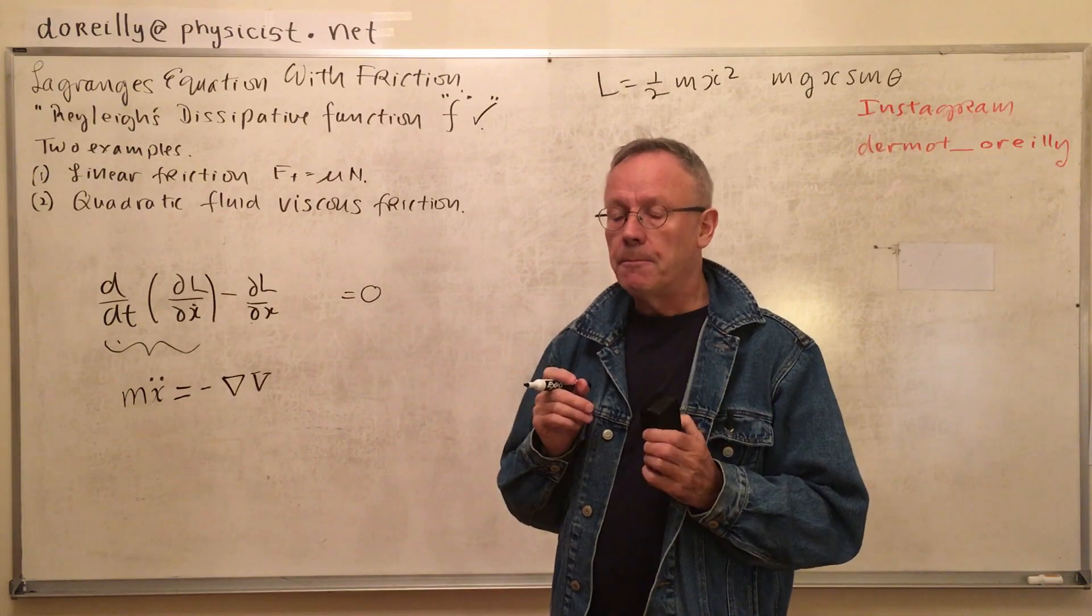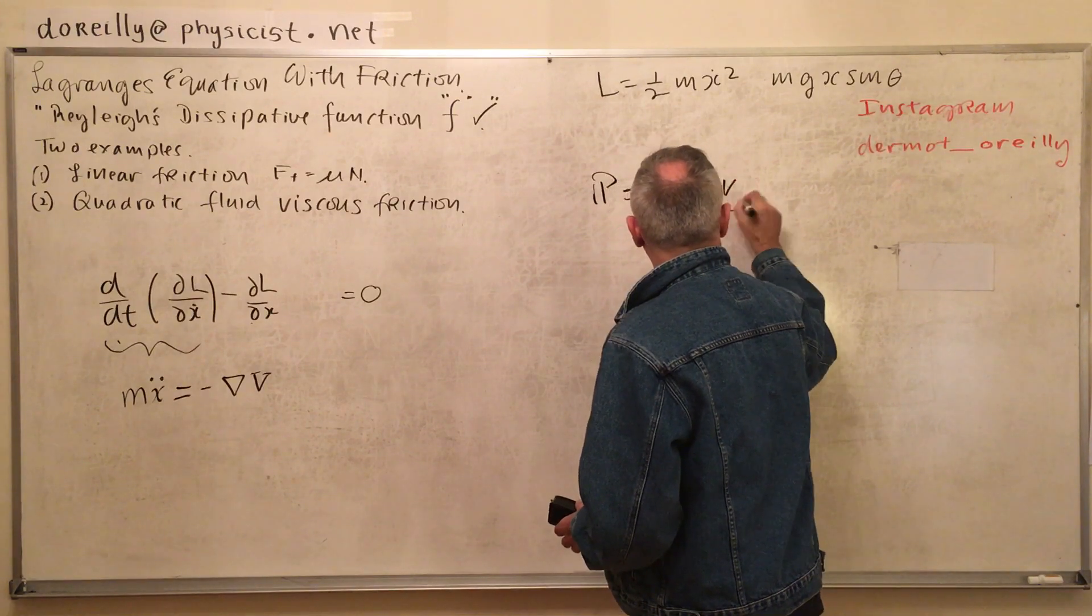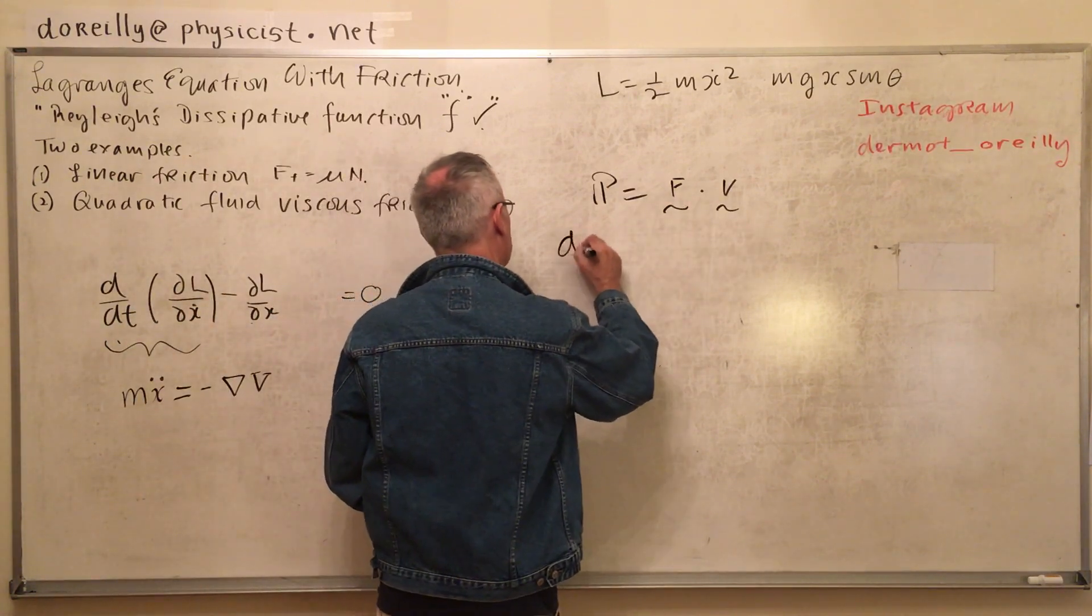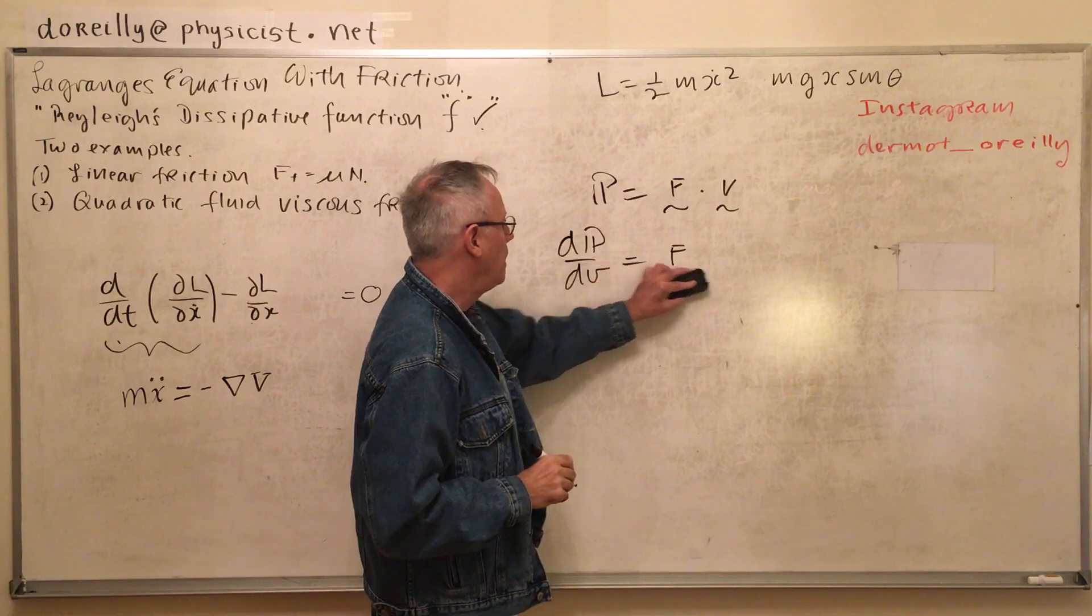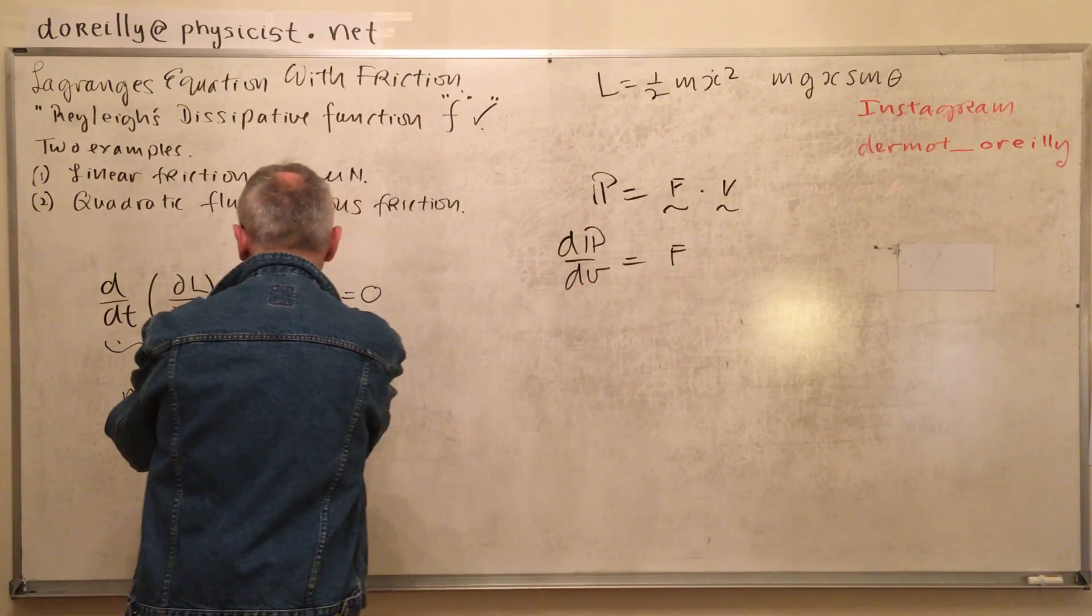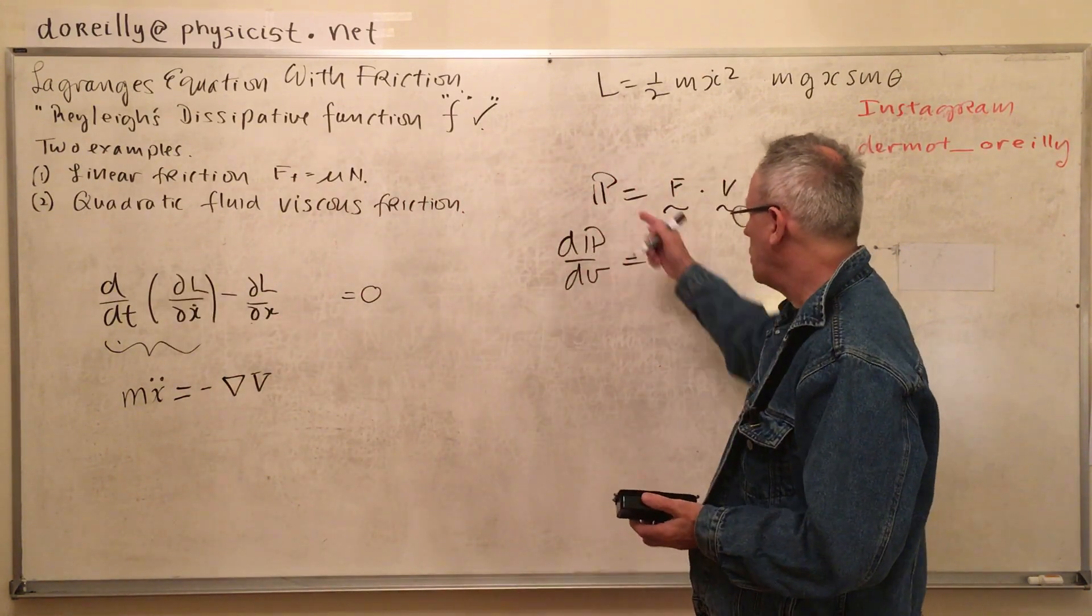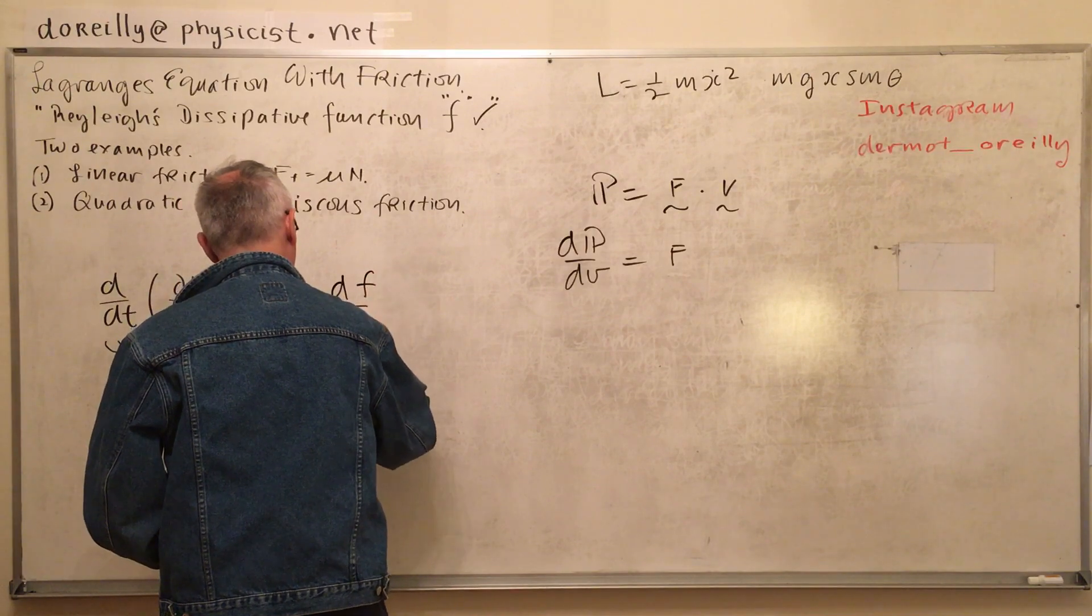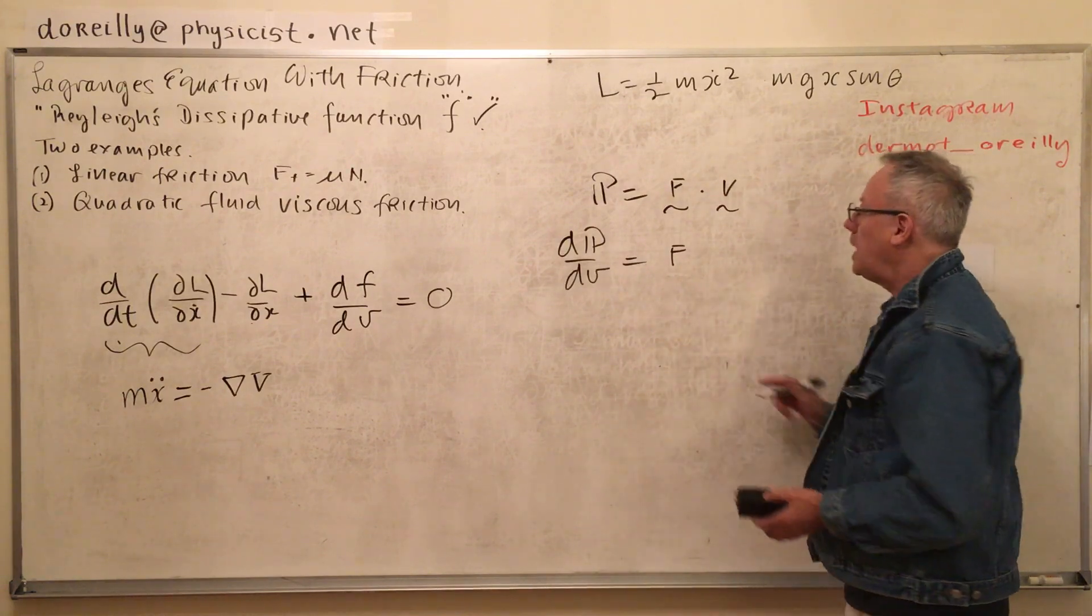In the case of constant friction, let's look at this first. Power is F dot V, force dot velocity. Take the derivative of power with respect to velocity, we get a force. To account for taking energy out with regard to friction, we include Rayleigh's dissipation function.